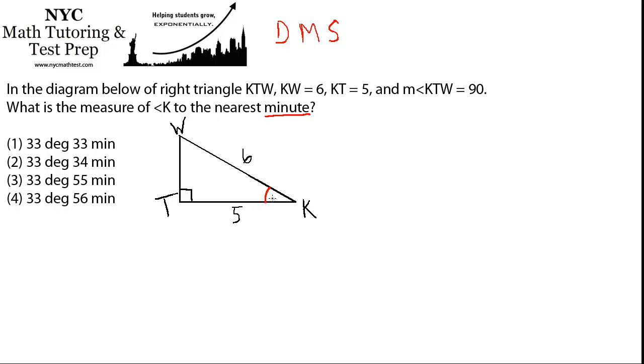And then how do we actually solve this problem and find this angle? Well, it's a right triangle, and we know two of the sides. We know the side adjacent to the angle that we're interested in, angle K, and we know the hypotenuse is 6. So if you remember your SOH-CAH-TOA, if we know the adjacent and the hypotenuse, we must be interested in using the cosine. So we'll say cosine of K equals adjacent over hypotenuse, which is 5 over 6.